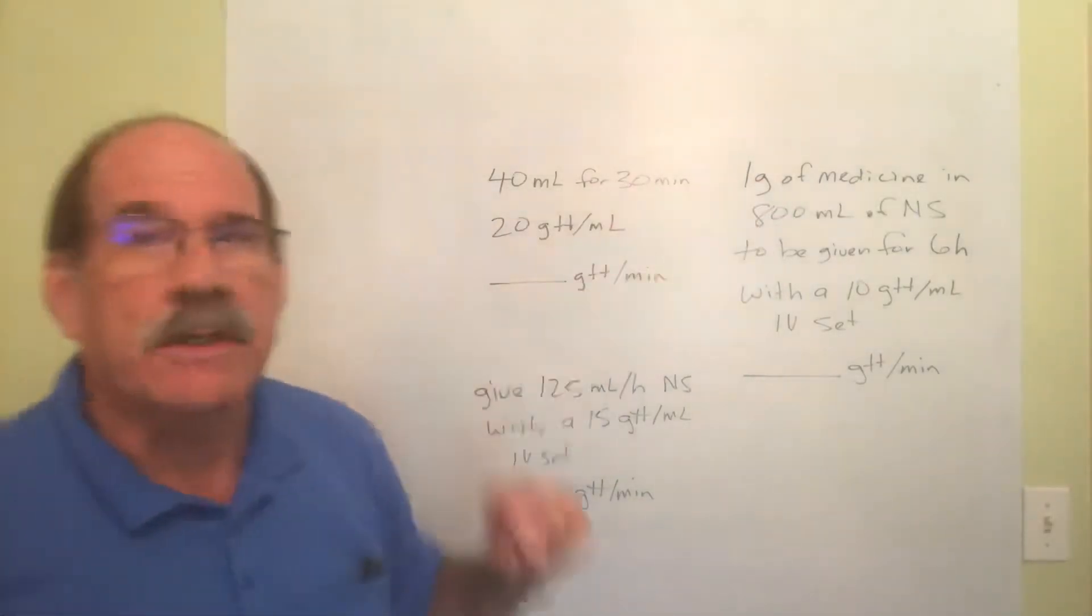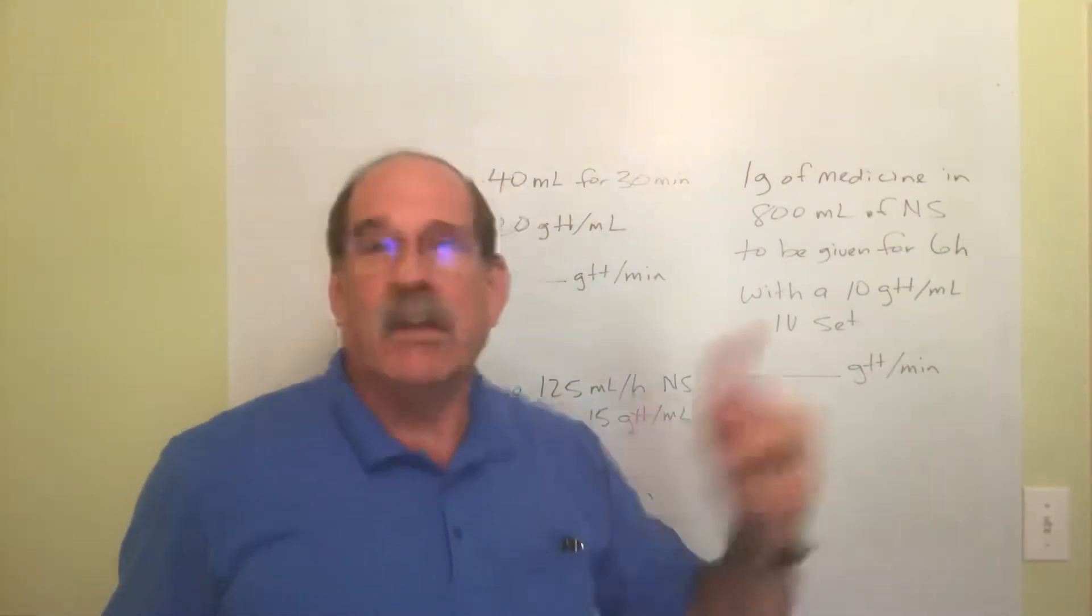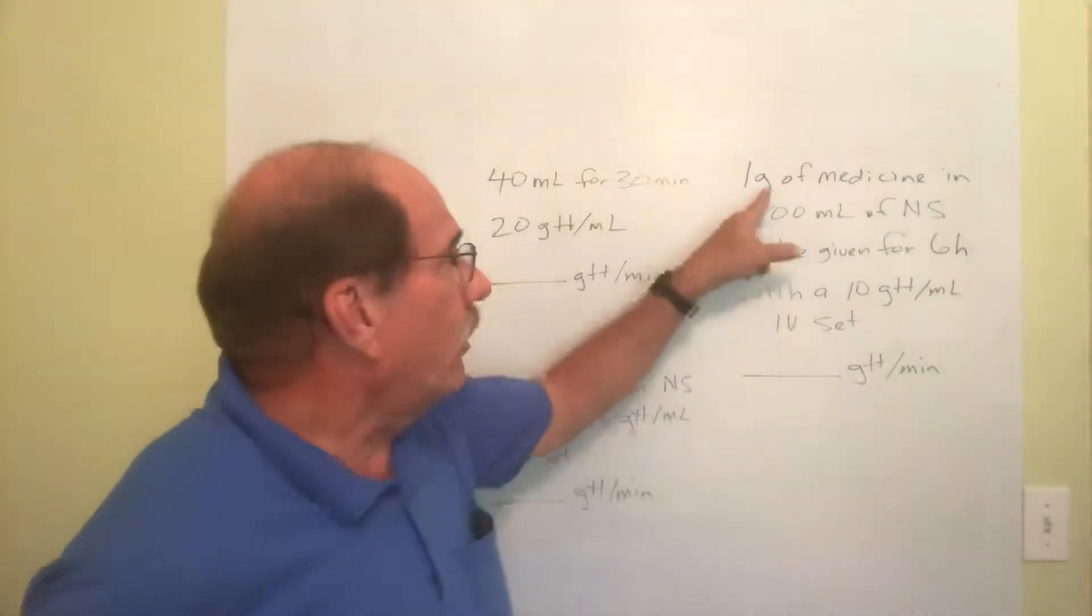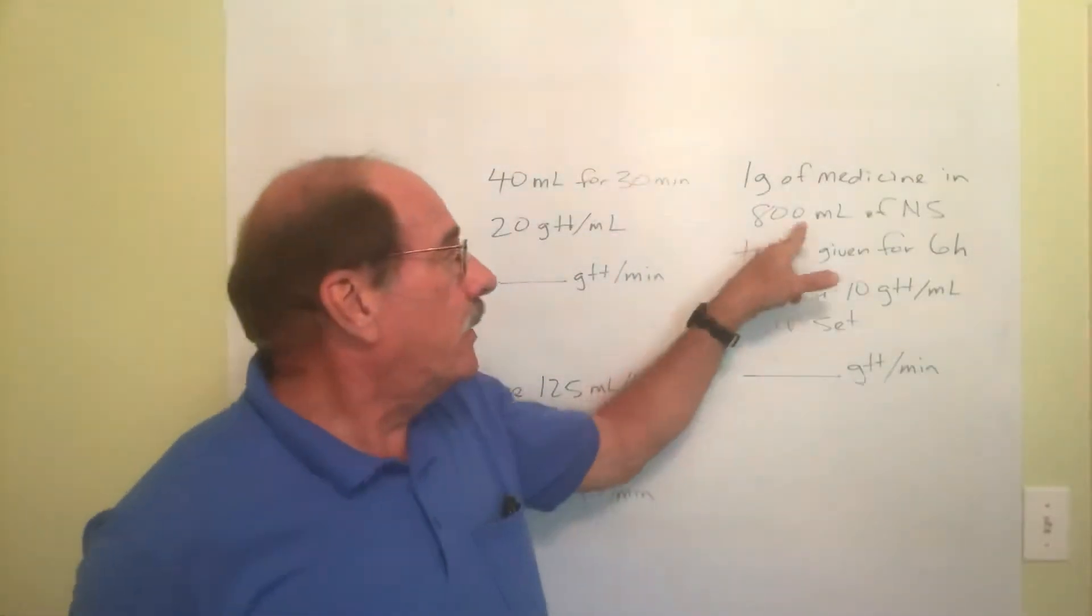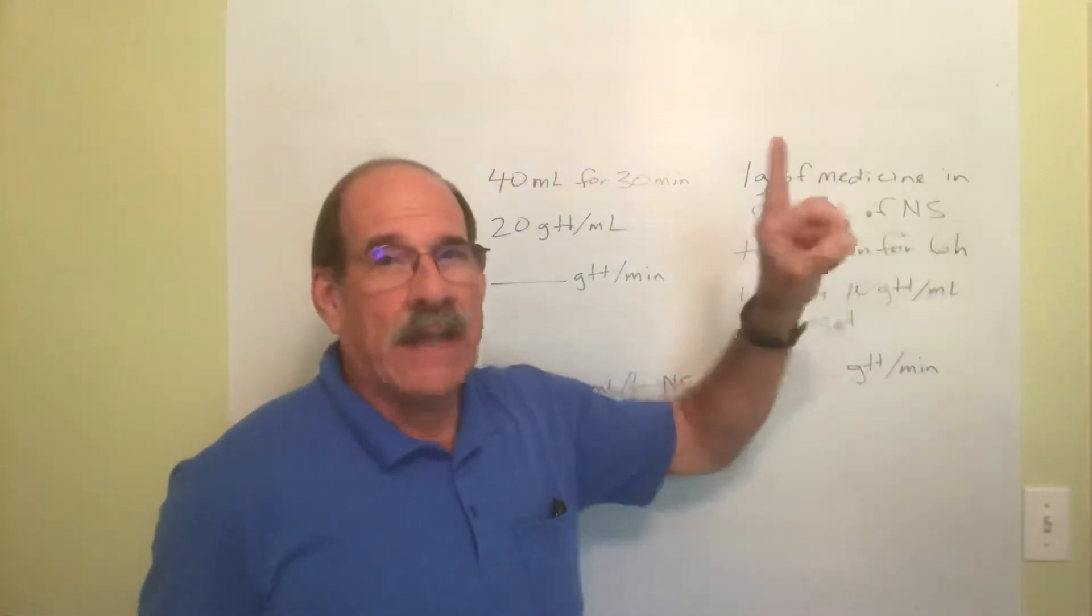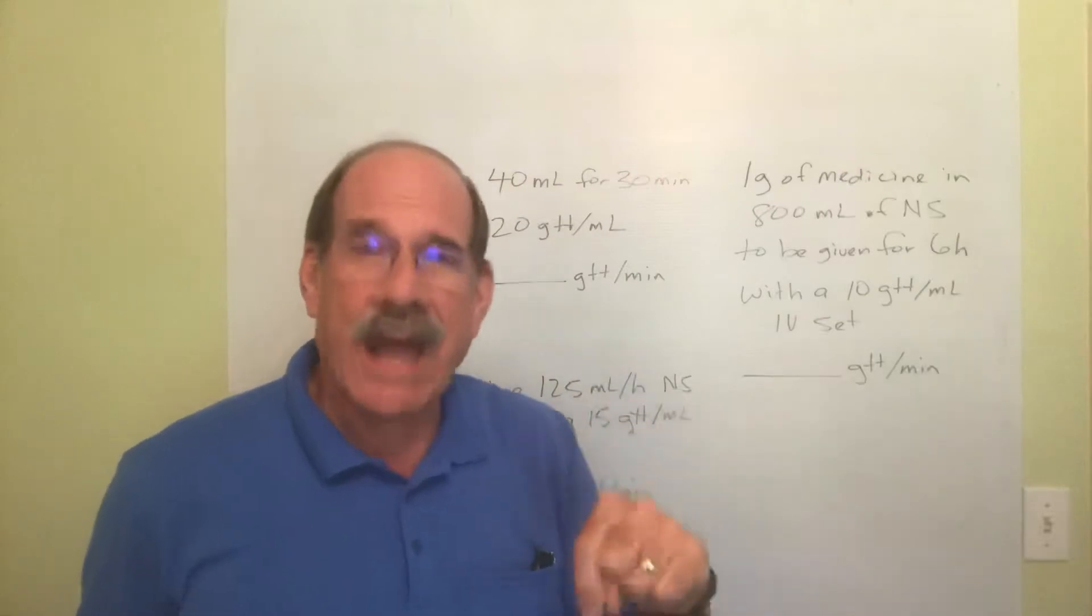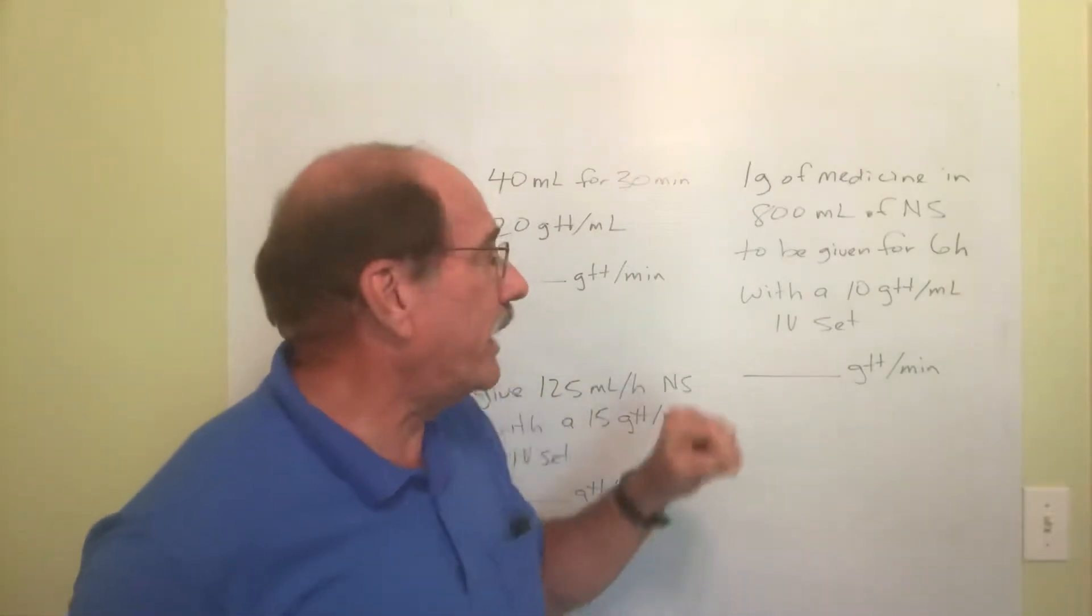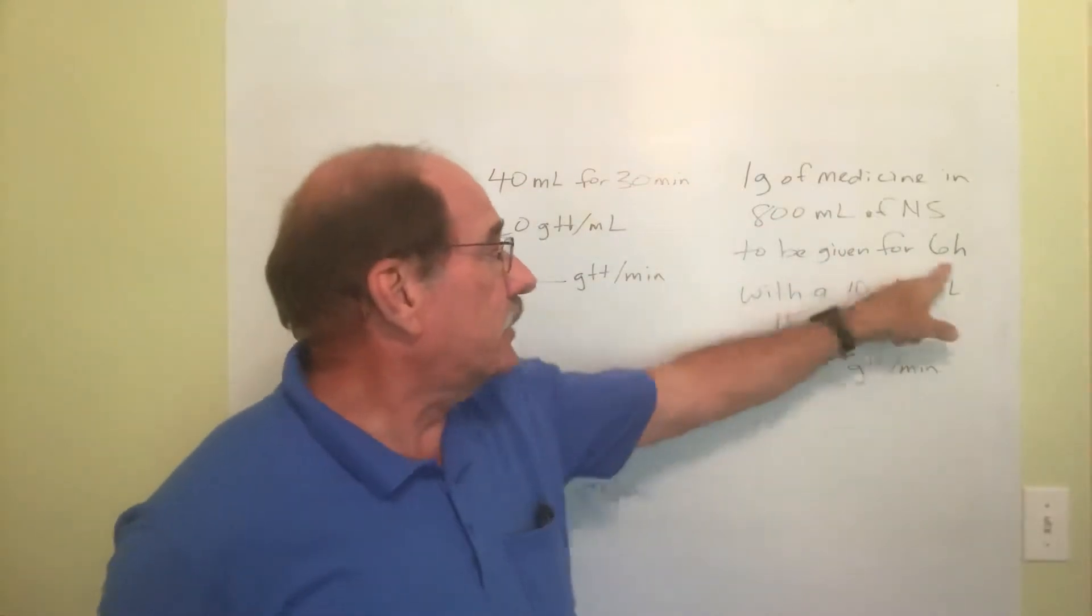How about this one first? We've encountered something similar in the previous material from last week. We have one gram of some kind of medicine in 800 milliliters of normal saline. All I care about is how many milliliters per hour I'm giving. I know I have 800 milliliters, and I'm going to give it for six hours.